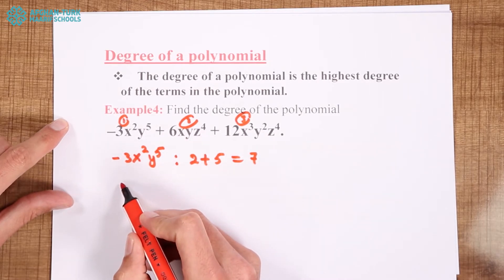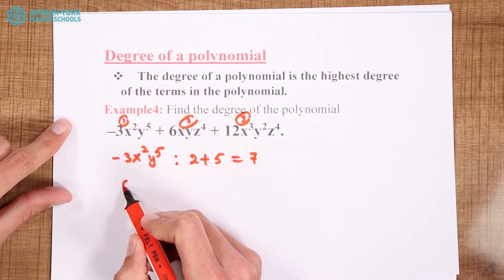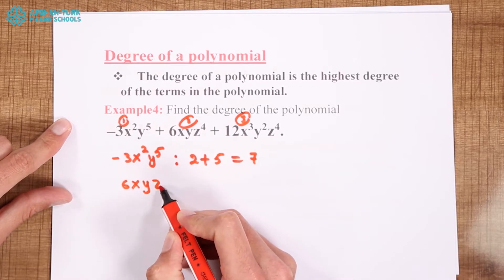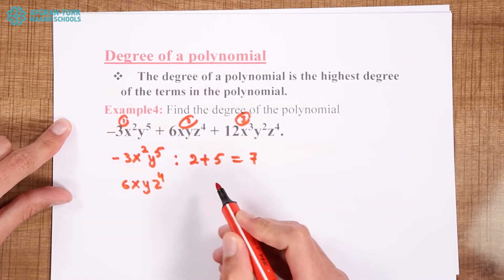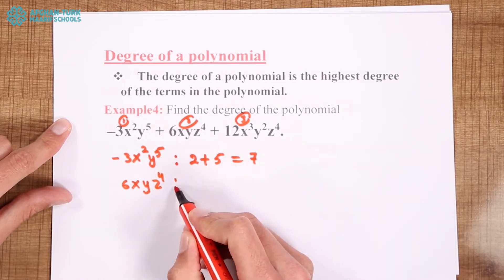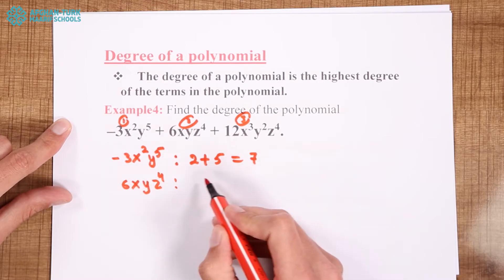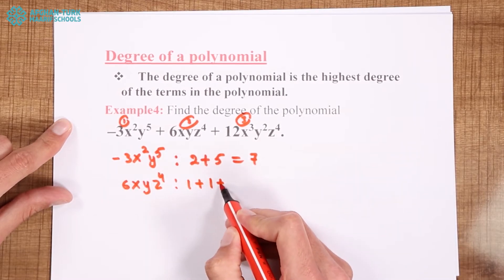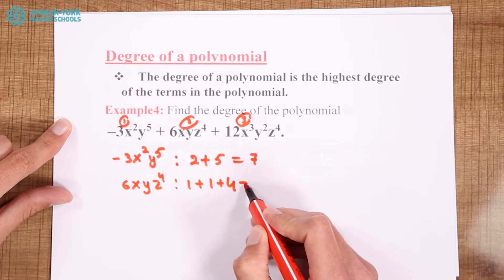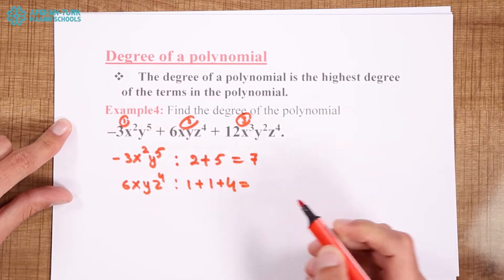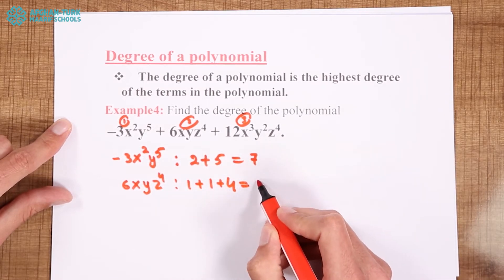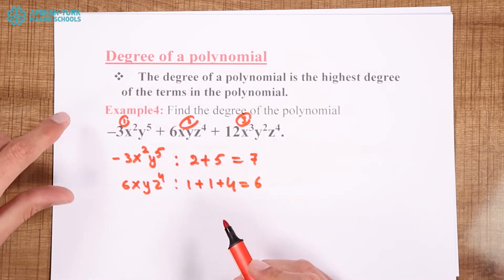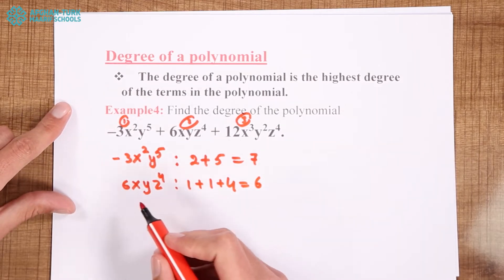For the second term we have 6, x, y, z to the power of 4. The power of x is 1, the power of y is 1, the power of z is 4. If we add: 1 plus 1 is 2, and 2 plus 4 is 6. The second term has 6 as the degree.